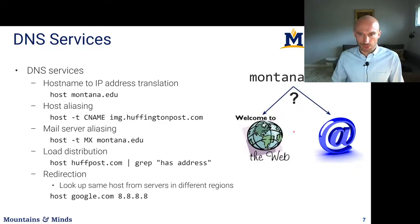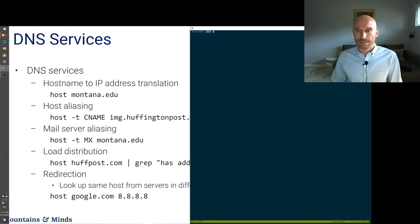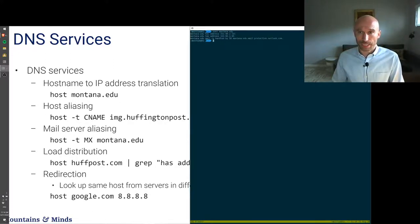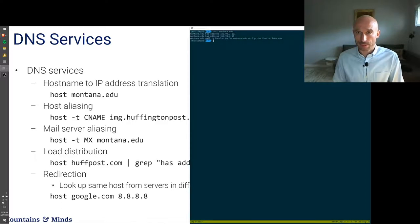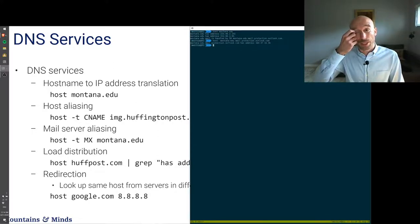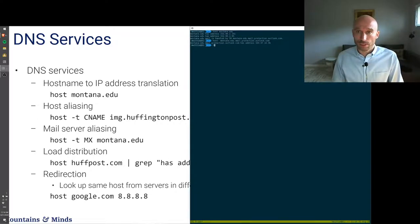In a demo: looking up montana.edu gives you both web addresses and the mail server address. If you want to send mail to someone at montana.edu you would contact that mail server. We can copy the mail server mnemonic and run 'host' on it to get the actual IP address of the university's SMTP server. You can also look this up directly by specifying 'type mx' or mail exchange for montana.edu.